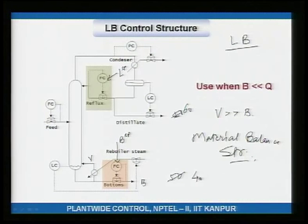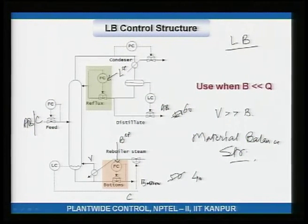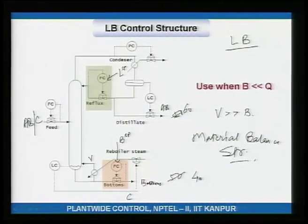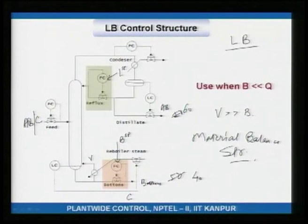You would use the LB structure when, for example, with components A, B, C, where C is very small compared to A and B — taking C down the bottoms and A, B up the top. Since the bottom stream would be very small compared to the boil-up, you must control the bottom level using reboiler duty rather than the bottoms stream.